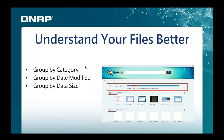QSearch helps you understand your files better through grouping by categories. You can group by date modified, or by file data size — a file distribution type of categorization. For example, it gives you a little graph showing how much of your data is images, music, PDF, Word, PowerPoint, video, or Excel files, giving you a better visualization of the amount of data you have on the QNAP.